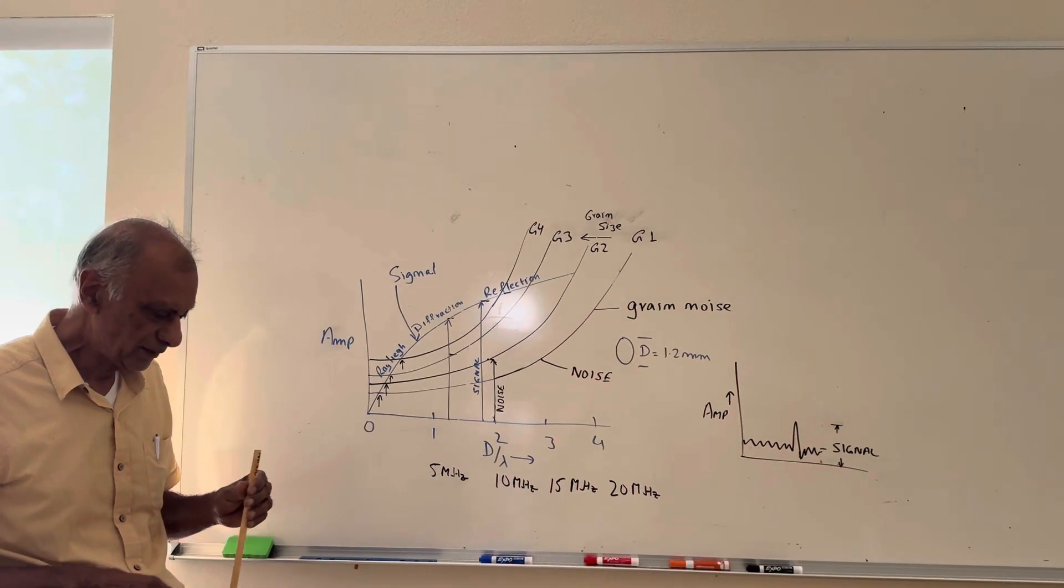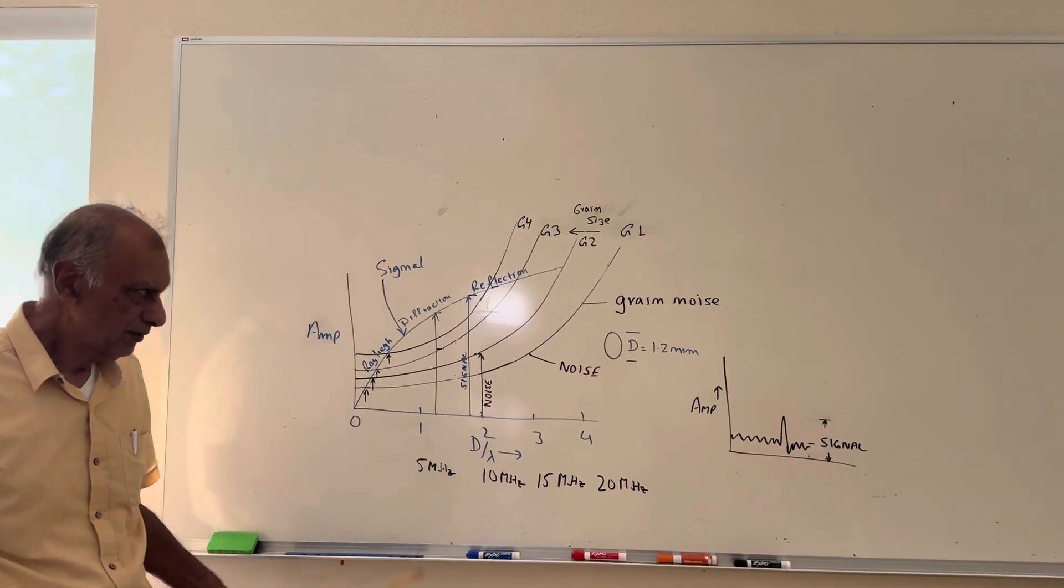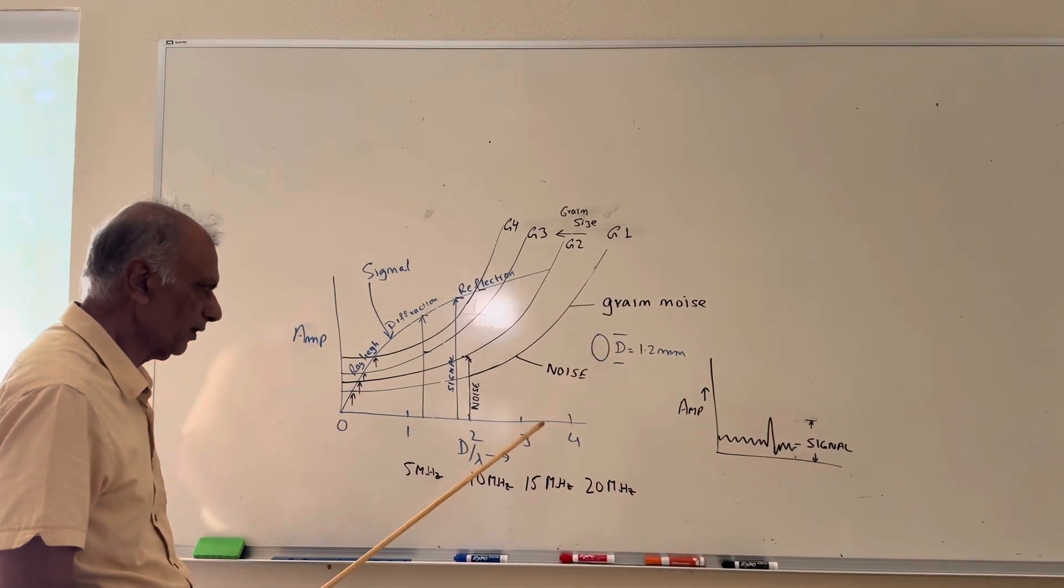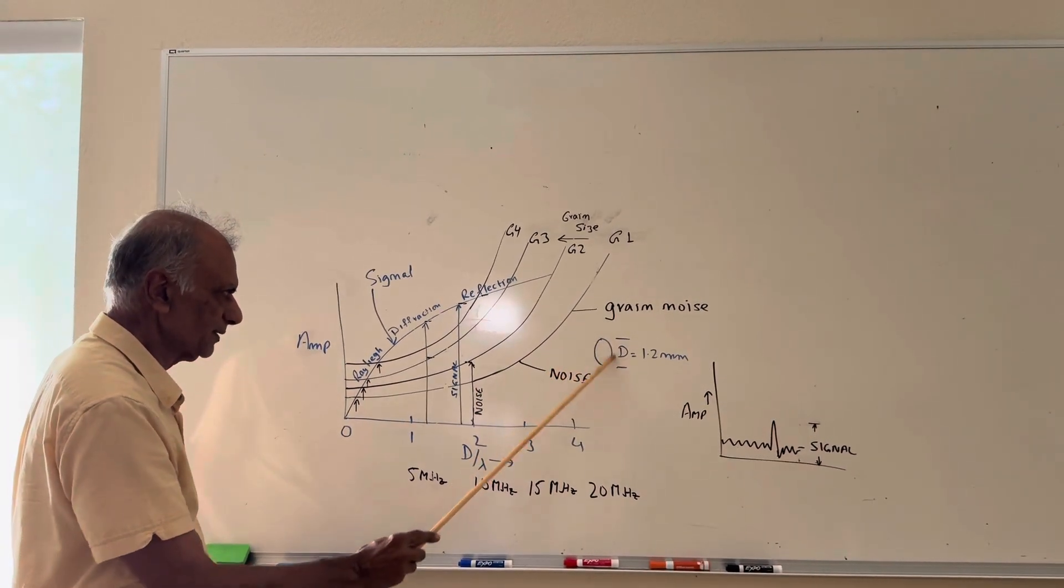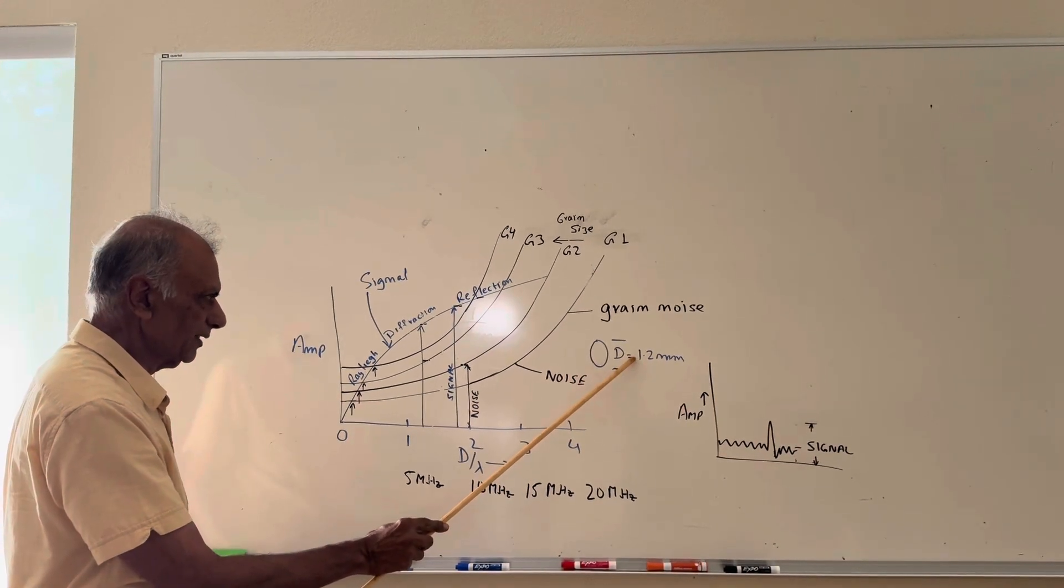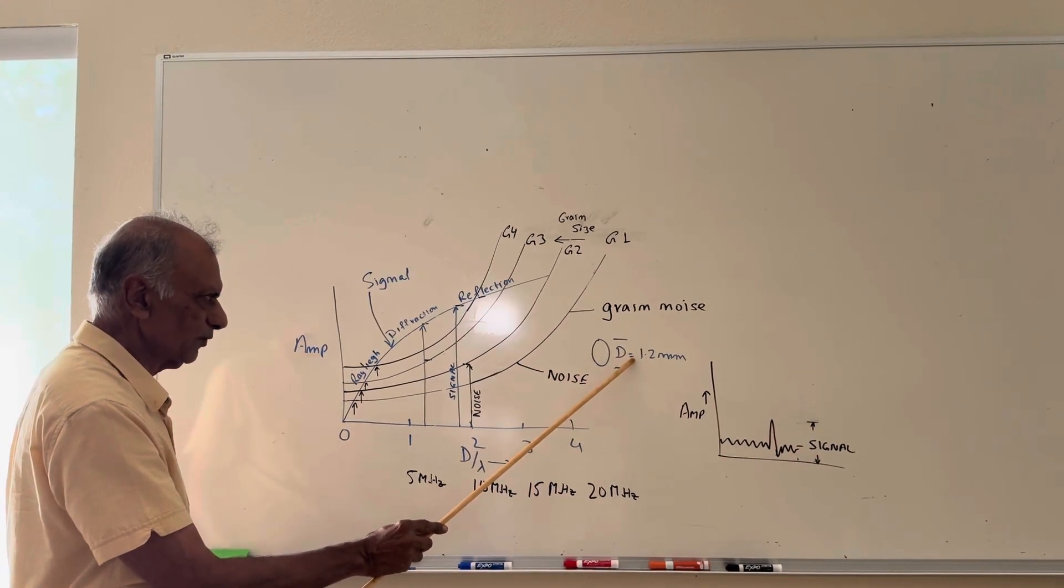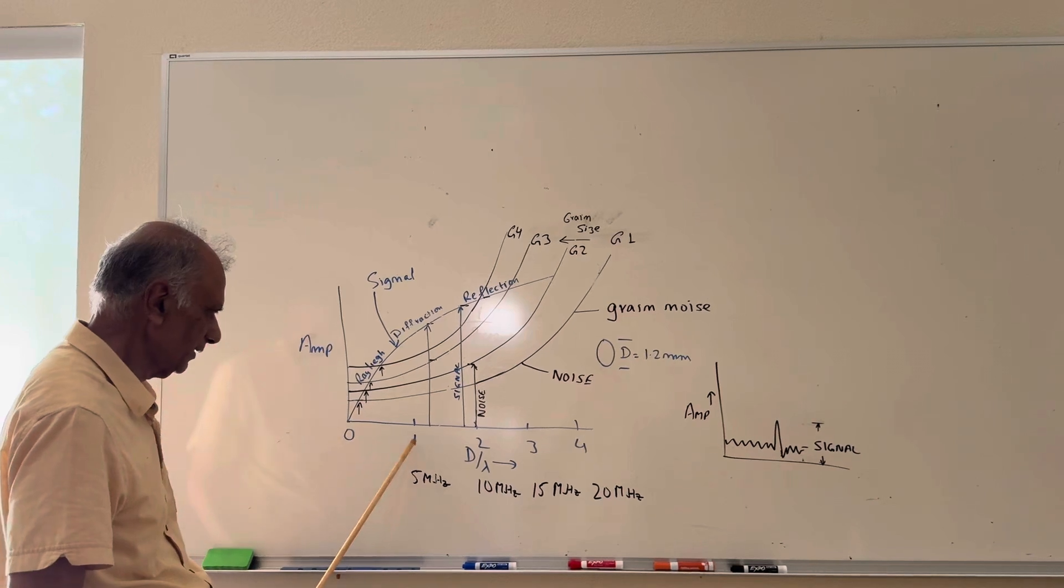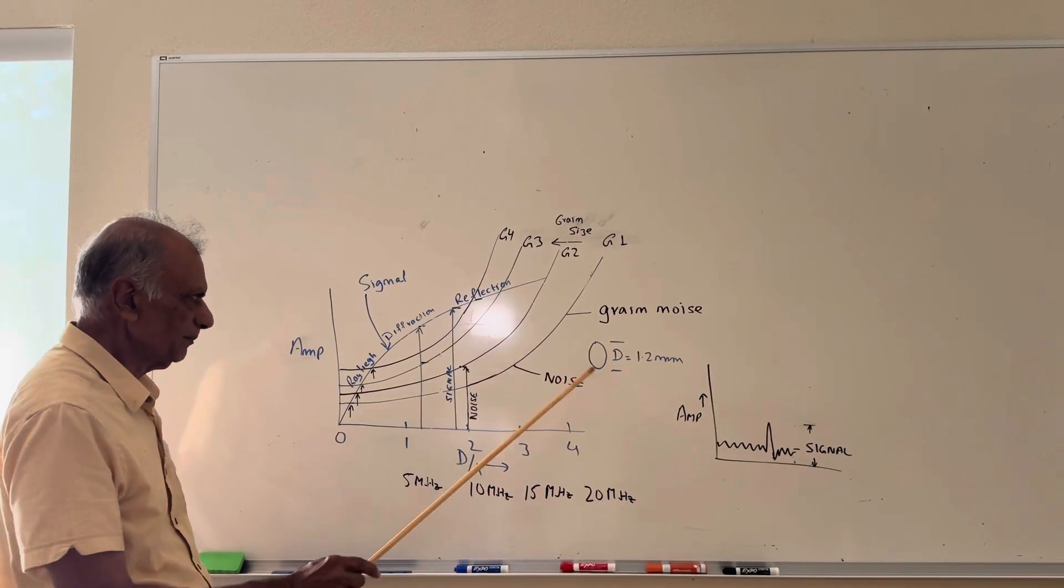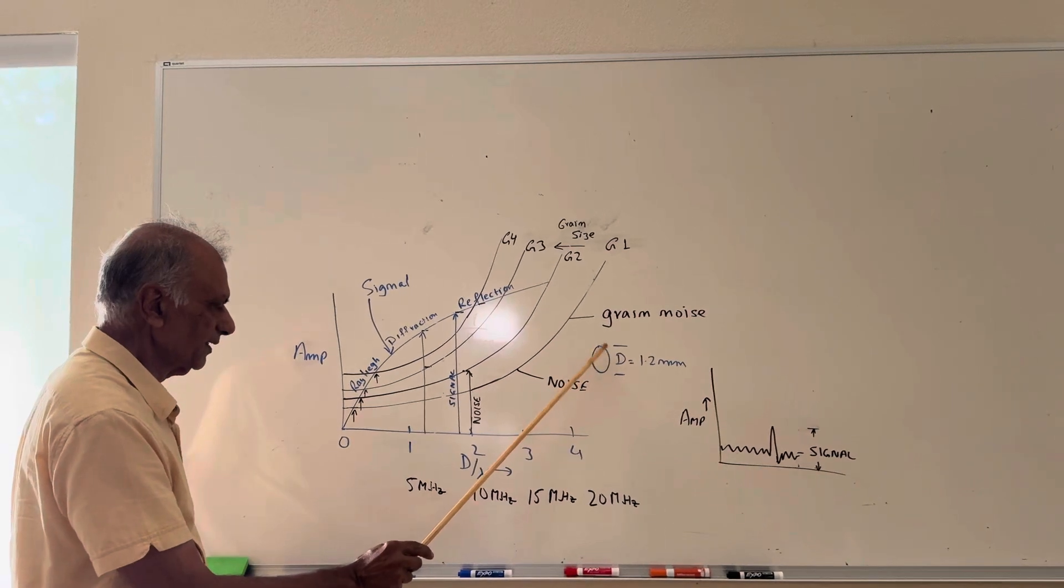What we have is two things working when we are looking for flaws. For example, if we have a flaw size of 1.2 millimeters and at 5 megahertz the wavelength is also 1.2 millimeters, I put it here as D over lambda equals 1. Now what happens is that as our D over lambda increases, what it means is that the size of the flaw increases relative to the wavelength.